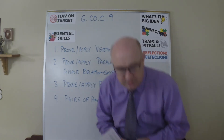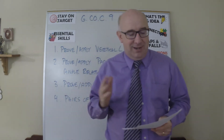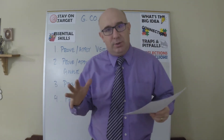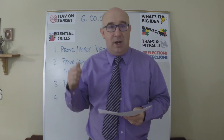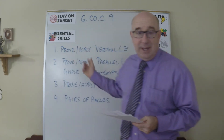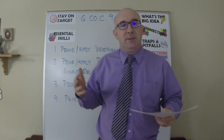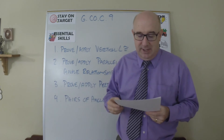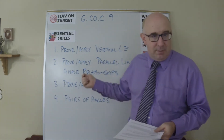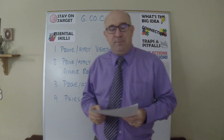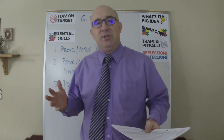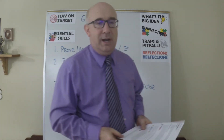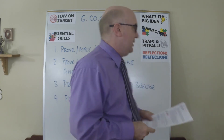Let me read it to you. It says: prove theorems about lines and angles. It's very general, and then it mentions a few. It talks about vertical angles being congruent, the relationships of parallel lines and a transversal, and the perpendicular bisector. It mentions a few, and you can add more, but I always say hit the ones it mentions.